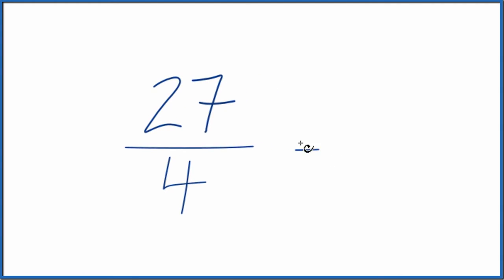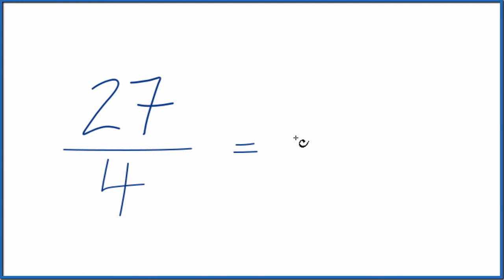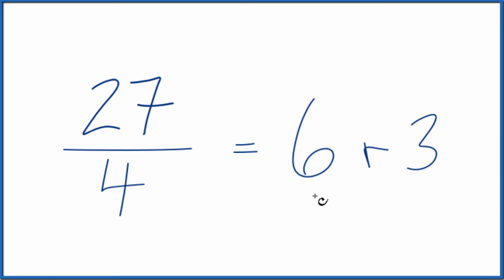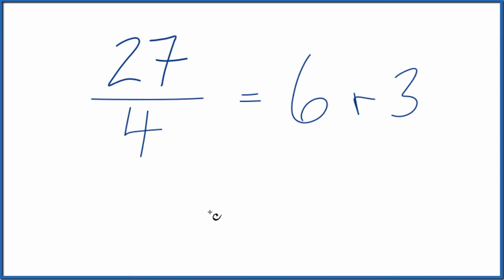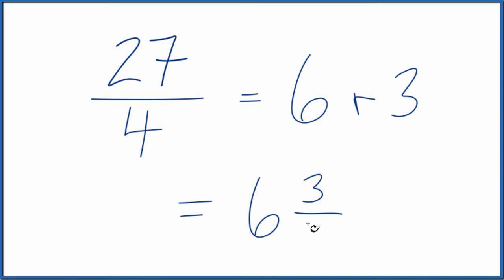4 times 6 is 24, with a remainder of 3. So we have 27 fourths equal to 6 with a remainder of 3. Now to write this as a mixed number, we write our 6, take our remainder — the 3 — and put it over the denominator. Our denominator here is also 4.